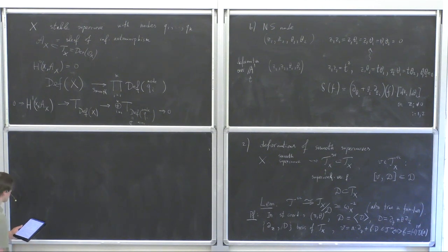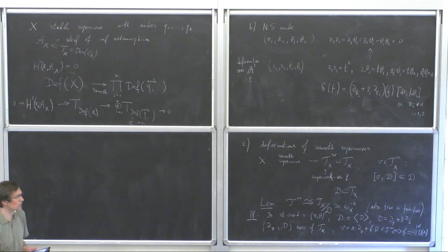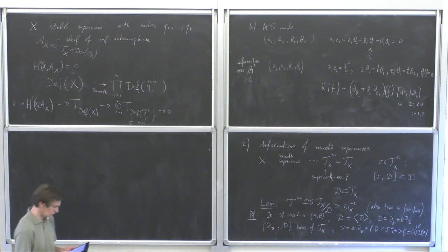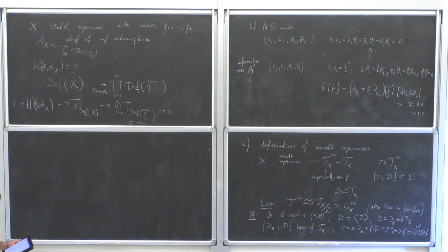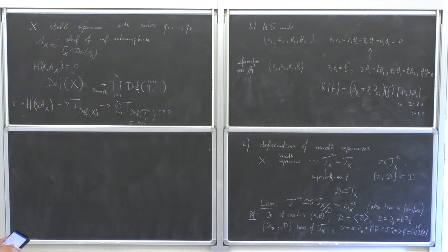Smoothness follows from deformation theory; properness follows from the corresponding classical problem about usual curves with spin structures. Hilbert schemes are also used to prove technical results on representability of isomorphism spaces. That's basically what goes into the proof that the moduli space forms a nice moduli stack.